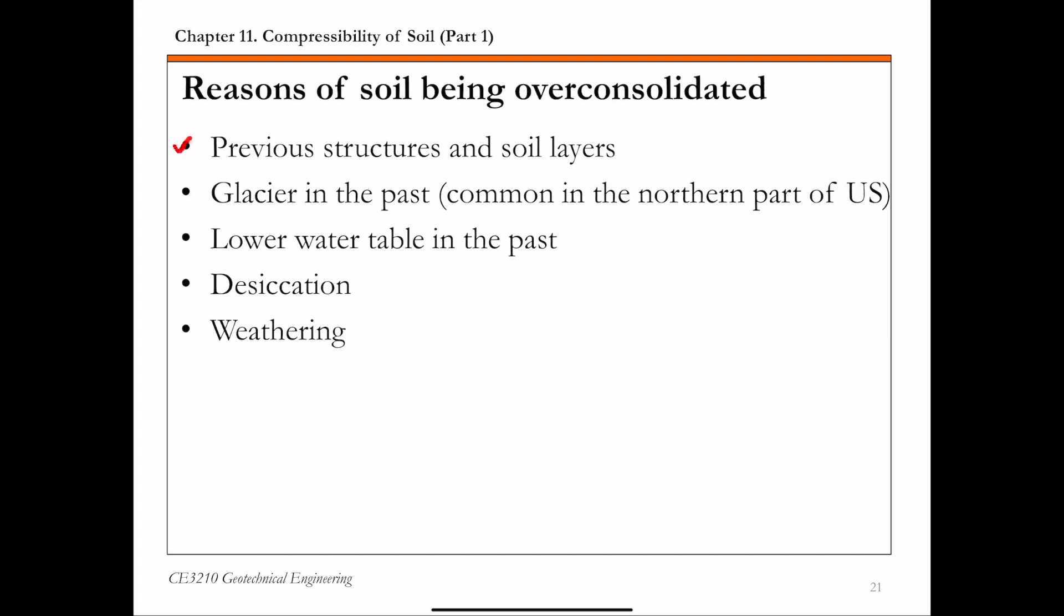The second one is there were glaciers on top, which is pretty common in the northern part of the country in the past. If those glaciers melted, that also reduces the effective stress and results in soil being overconsolidated.